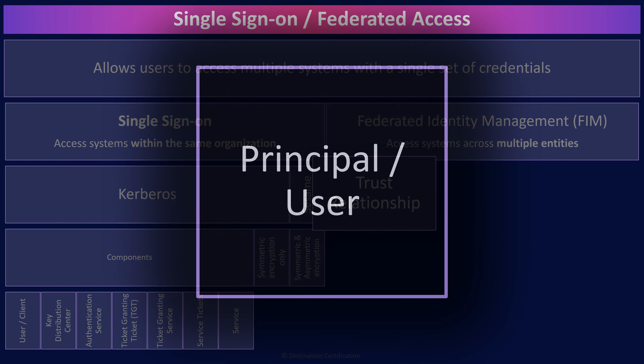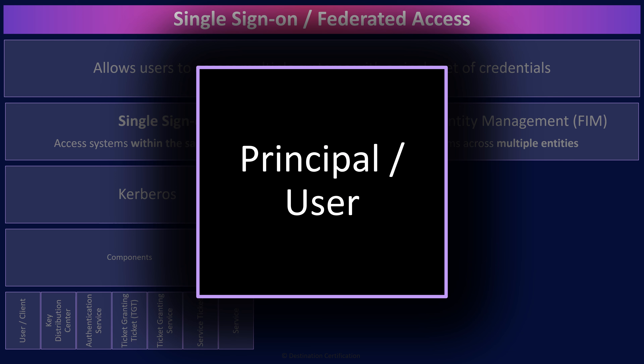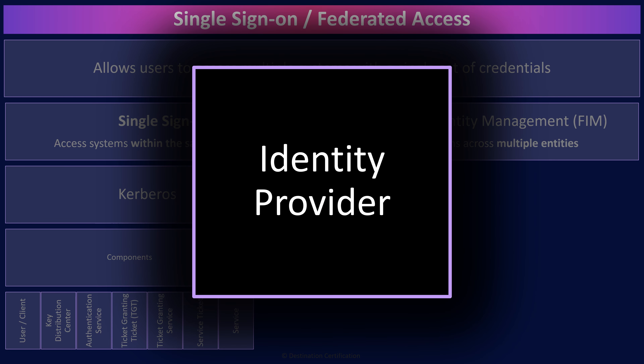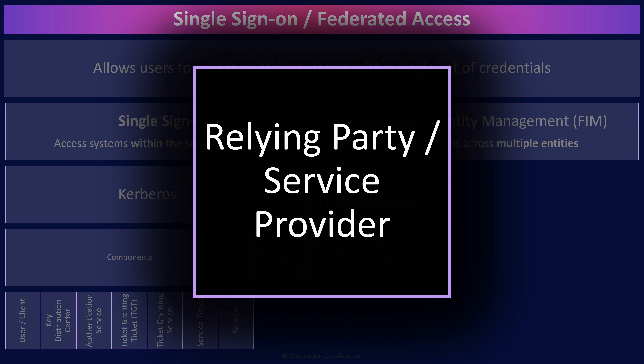The first entity is the user, sometimes also referred to as the principal. The identity provider is the entity that authenticates the user, verifying the user's identity via authentication by knowledge, ownership, or characteristic. In many organizations, the identity provider will be something like Active Directory. The service provider, also sometimes referred to as the relying party, is what the user wants to access. The service provider is often not an application owned by the organization, but rather an application owned and managed by a vendor — think of a SaaS application for submitting helpdesk tickets, booking travel, entering expenses, etc.